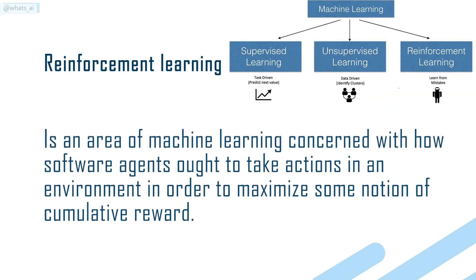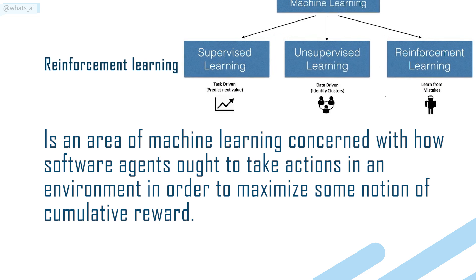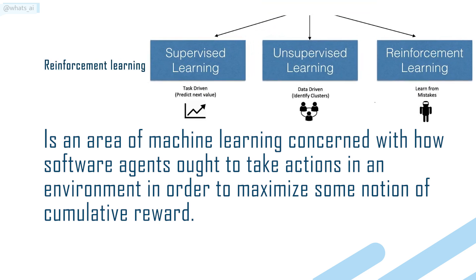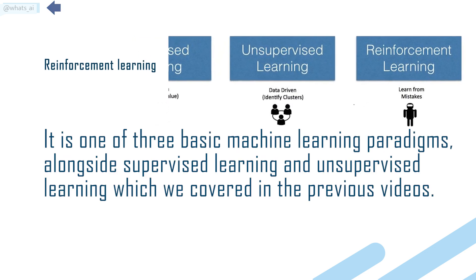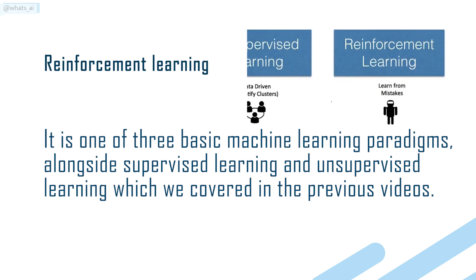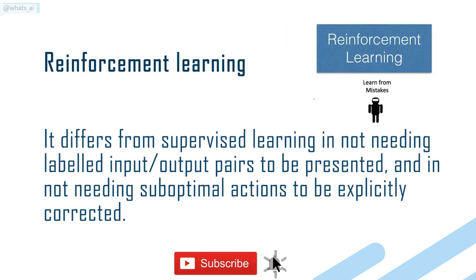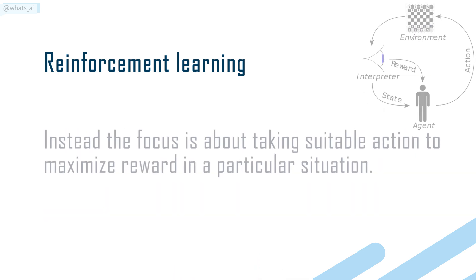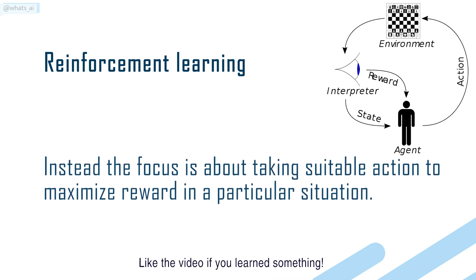Reinforcement learning is an area of machine learning concerned with how software agents ought to take actions in an environment in order to maximize some notion of cumulative reward. It is one of three basic machine learning paradigms, alongside supervised learning and unsupervised learning which we covered in the previous videos. It differs from supervised learning in not needing labeled input-output pairs to be presented, and in not needing sub-optimal actions to be explicitly corrected. Instead, the focus is about taking suitable action to maximize reward in a particular situation.